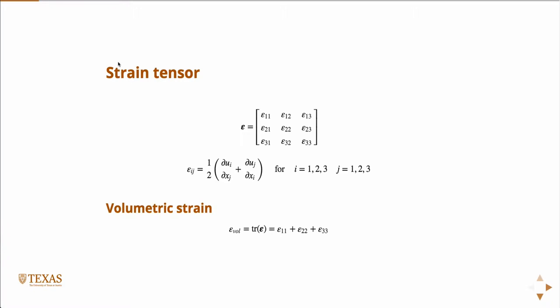So just some definitions. The volumetric strain is the trace of the strain tensor, so the sum of the diagonals. We call that the volumetric strain. This is the total strain that goes into changing the volume of something.